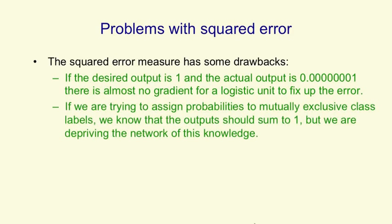Also, if we're trying to assign probabilities to mutually exclusive class labels, we know that the output should sum to one. Any answer in which we say the probability that it's an A is three quarters and the probability that it's a B is also three quarters is just a crazy answer. And we ought to tell the network that information — we shouldn't deprive it of the knowledge that these are mutually exclusive answers.